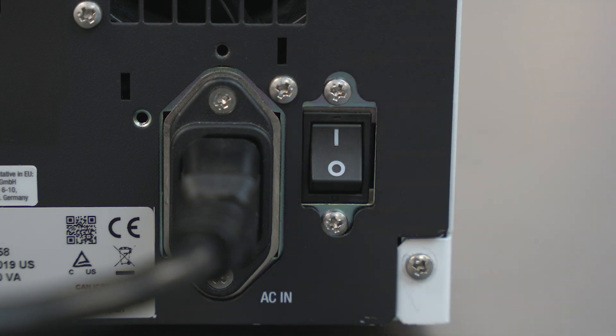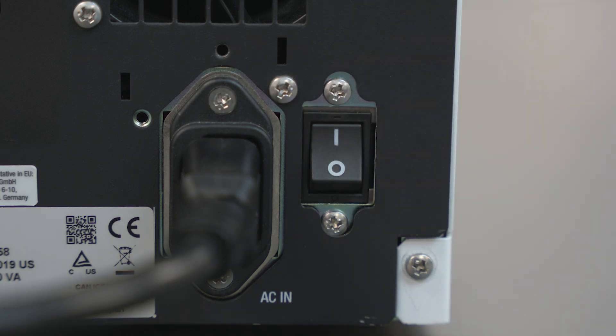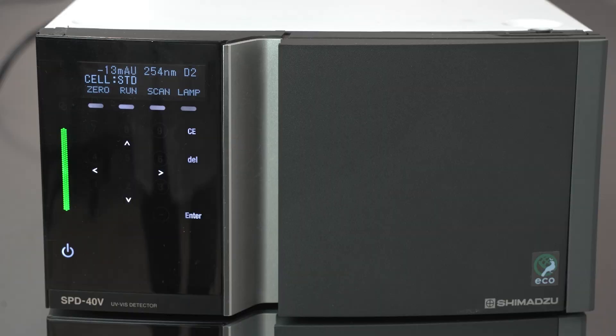Turn the main power switch located at the back of the detector on. Reset the lamp operating hours for the replaced lamp.